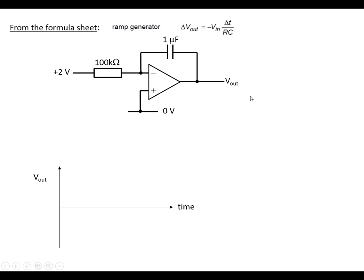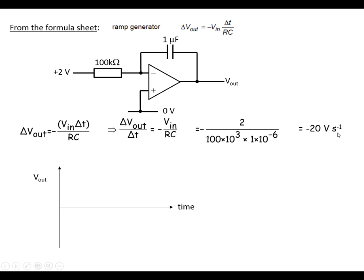V out is going to ramp downwards. Okay, we're going to put some numbers in here and look at this in two ways. So first of all, we're going to look at how much V out changes in a given amount of time. So if we just divide both sides by delta T, we get change in V out divided by T, so this tells us how many volts per second the output is going to change by. So if we plug the numbers in, we end up with minus 20 volts per second, which means in one second the output will change by 20 volts downwards, or another way to look at it: in 0.1 seconds it will drop by 2 volts. So it drops by 2 volts every 0.1 seconds.